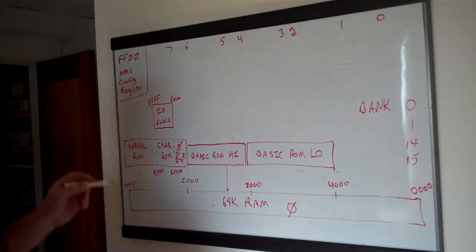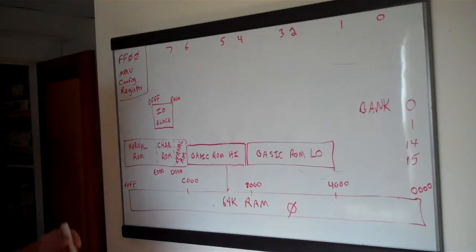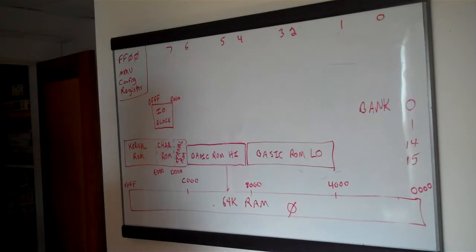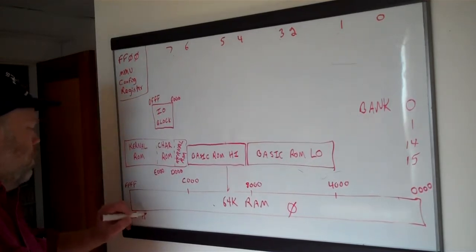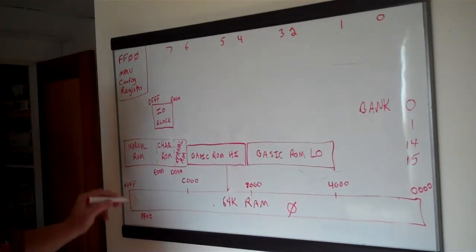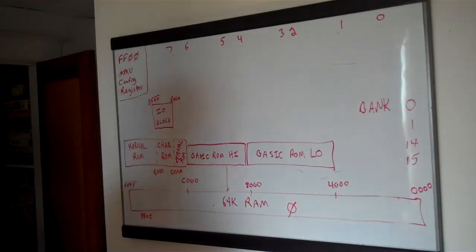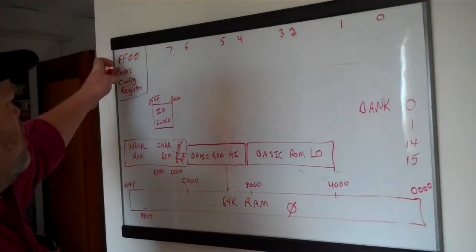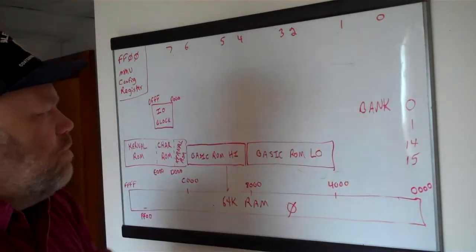That's why the MMU configuration register comes in — that's what's unique to the Commodore 128 compared to the C64. It has an MMU, a Memory Management Unit, which does this switching. The configuration register sits at FF00, and it's always available no matter what else is switched on or off, because you've got to be able to get at it to change things. It has 8 bits, which we'll go through in detail.